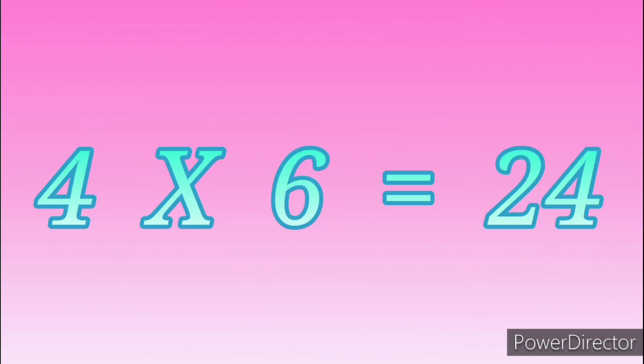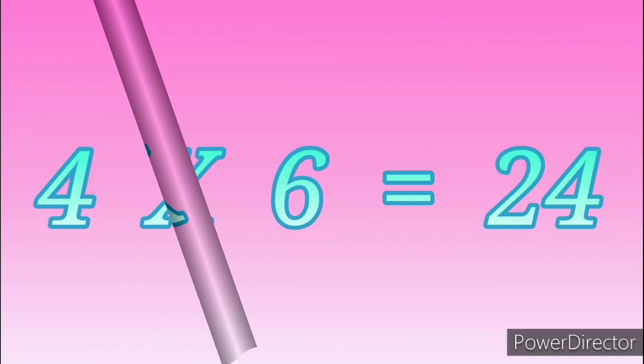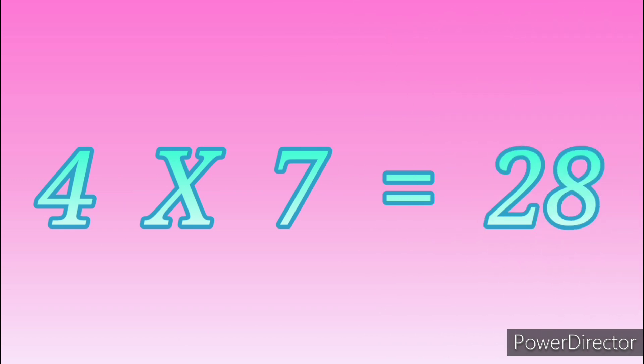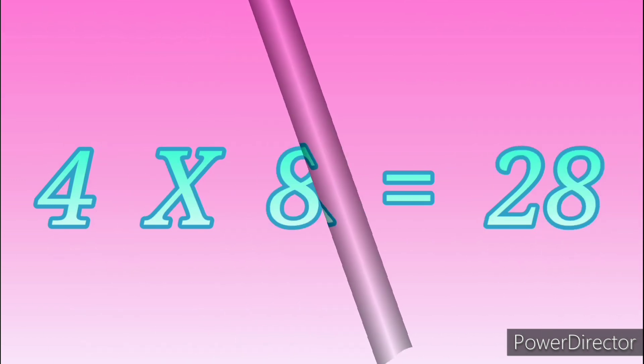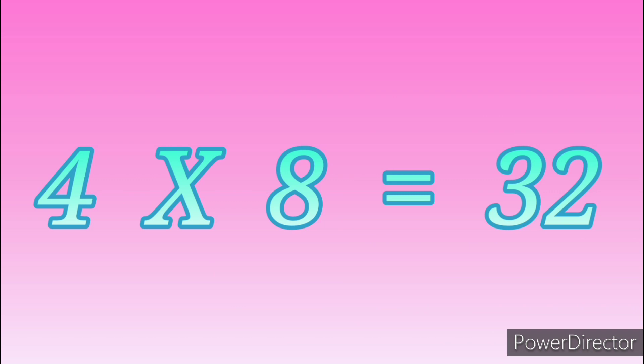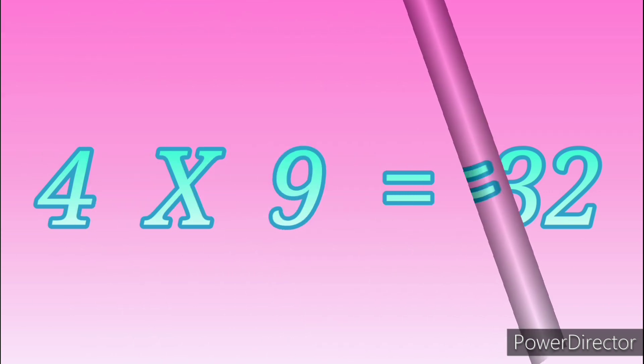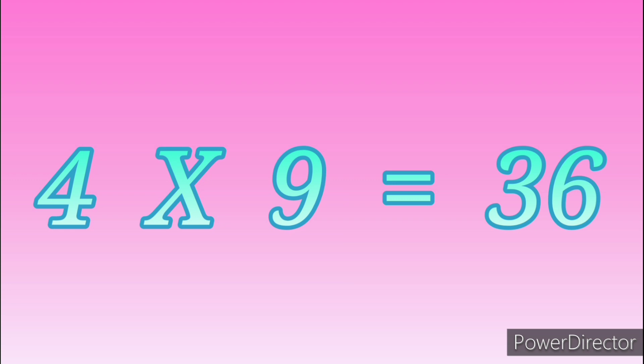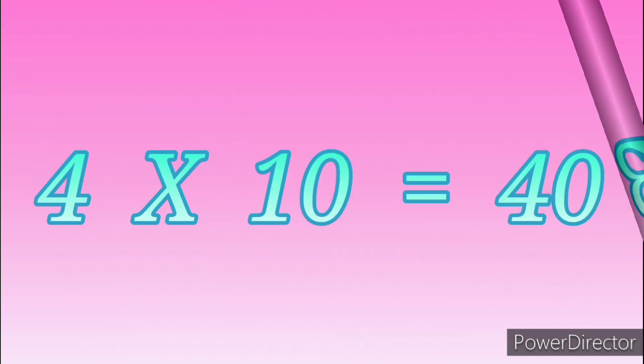4 sevens are 28. 4 eights are 32. 4 nines are 36. 4 tens are 40.